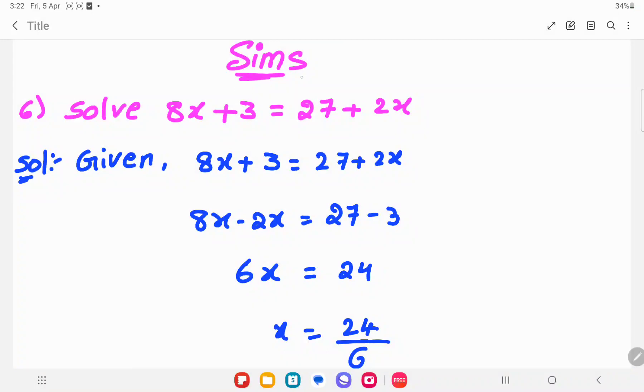Hi, welcome to Sims. Today's sum: Solve x. 8x plus 3 is equal to 27 plus 2x. Let's see the solution.